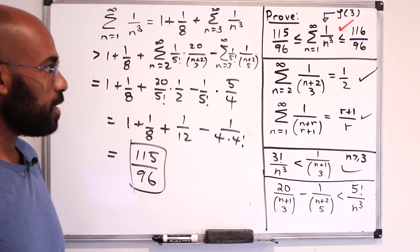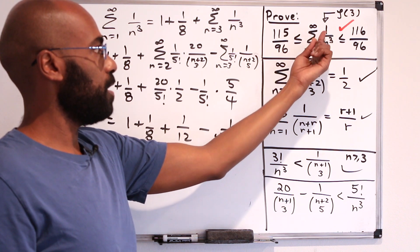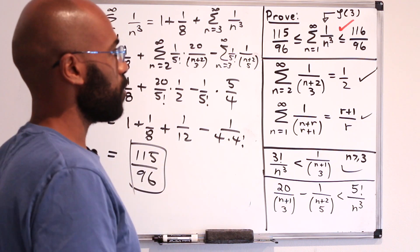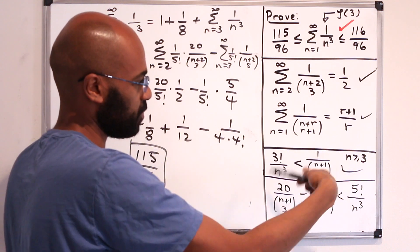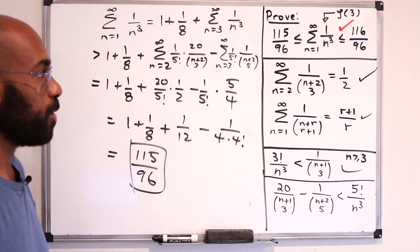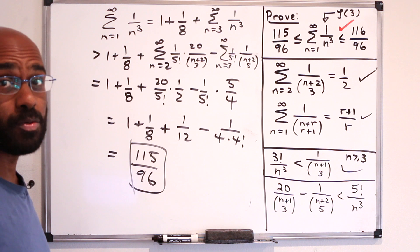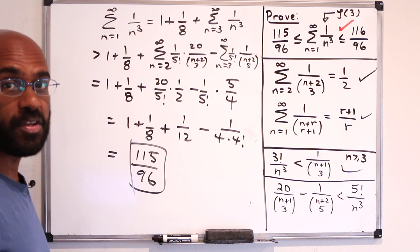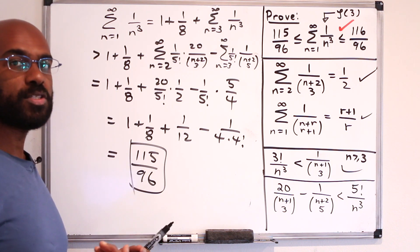The key idea is that when trying to find bounds on the sum of 1 over n cubed, you estimate this quantity in terms of reciprocals of binomial coefficients. That gives upper and lower bounds which, in this case, are really tight. I hope you enjoyed today's video — if you did, click the like button, and if you want to see more videos like this, subscribe to the channel.